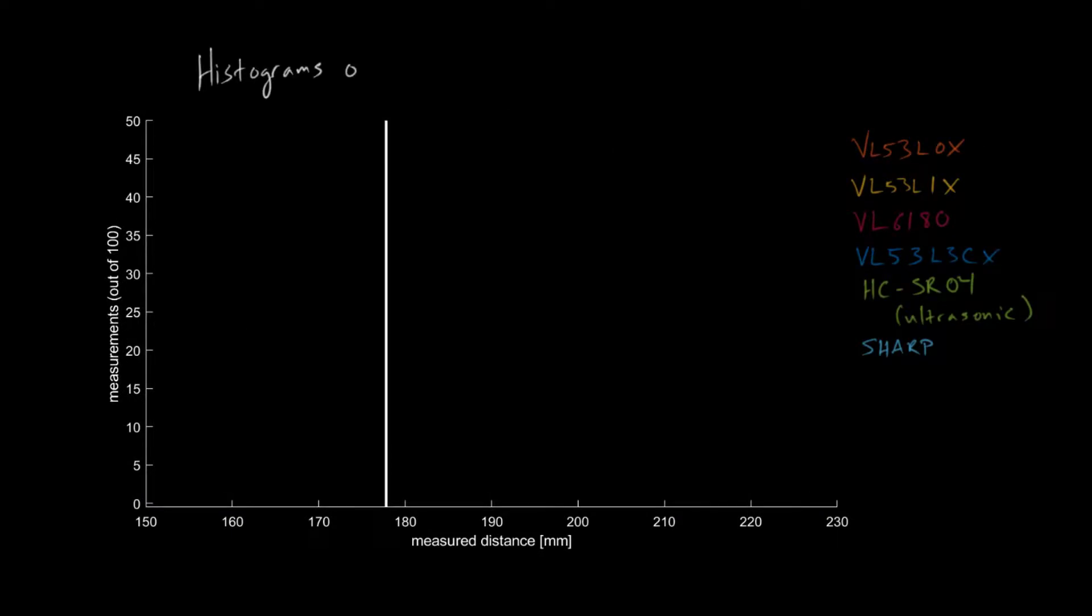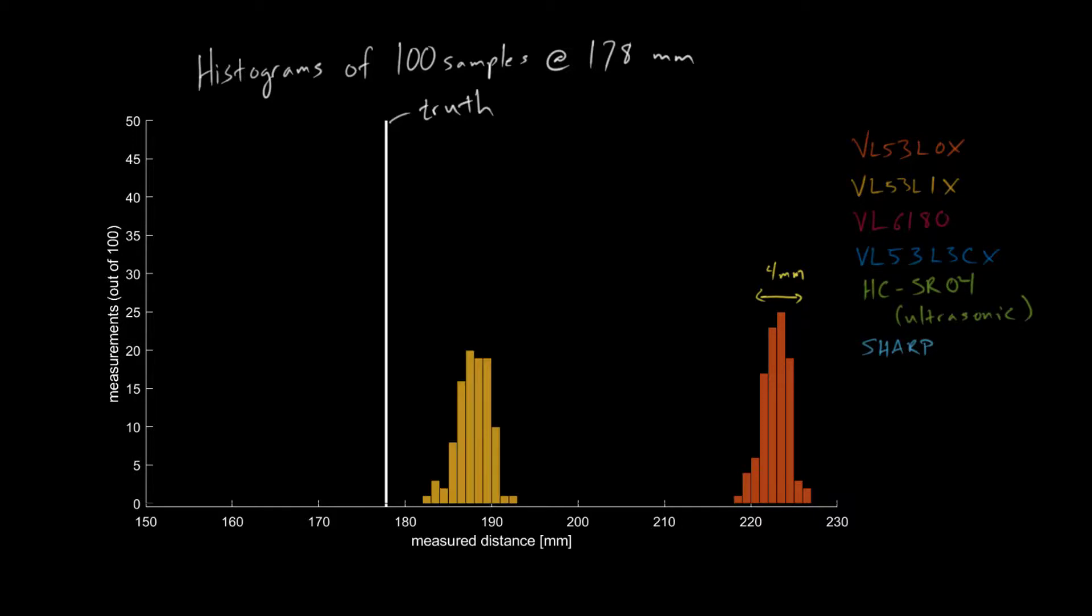So one other graph that I want to show you are some histograms of 100 samples at the measurement that was taken at 178 millimeters. So here, the truth is the line through 178 millimeters. So first, the VL53L0X shows a spread of about 4 millimeters. So you don't have a huge spread. It's pretty localized, but there's some offset, as we saw in the previous graphs. Similar, you get similar results for the VL53L1X. The VL6180 has a similar spread. It's a little bit closer to the truth at 4 millimeters on the spread. The VL53L3CX is the only one that really shows a tighter spread and is, at this point, very close to the truth.